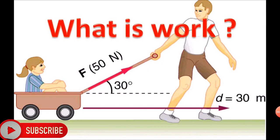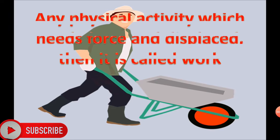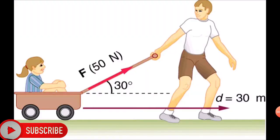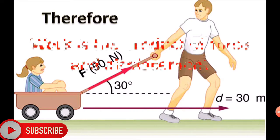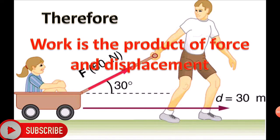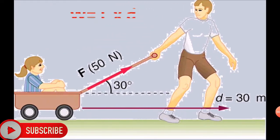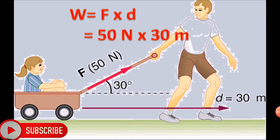What is work? Any physical activity which needs force and displacement is called work. Therefore, work is the product of force and displacement. Here, force applied is 50 Newton and the object gets displaced up to 30 meters. Work done is equal to the product of force and displacement, which is equal to 50 Newton into 30 meters.